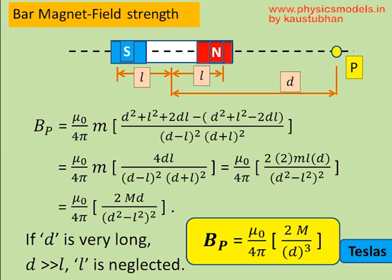Now, when we expand those terms, we will find in the numerator that we will get 4dl because 2dl minus of minus 2dl will be 4dl.